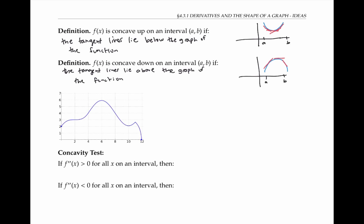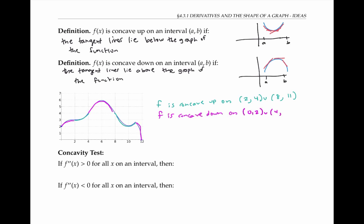In this example, f is concave up around here and again around here. On the left piece, it looks like part of a bowl that could hold water. So we can say that f is concave up on the intervals from two to four, and the interval from eight to 11. f is concave down on this piece, and this piece, and this piece. So we can say that f is concave down on the interval from zero to two, from four to eight, and from 11 to 12.